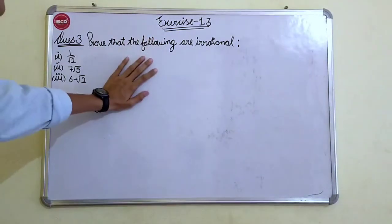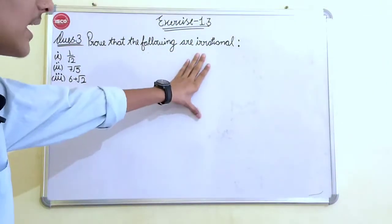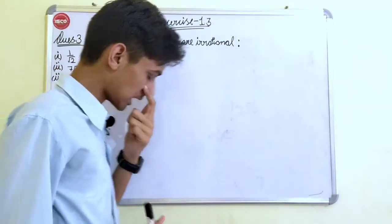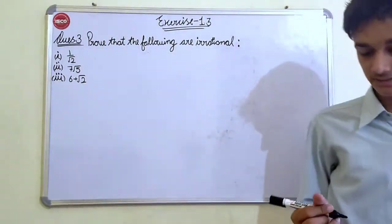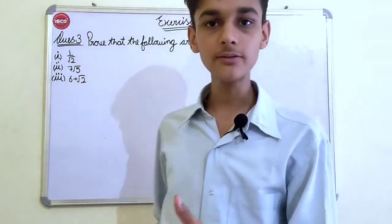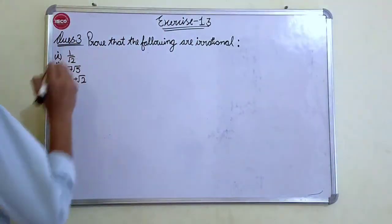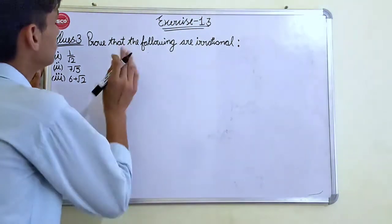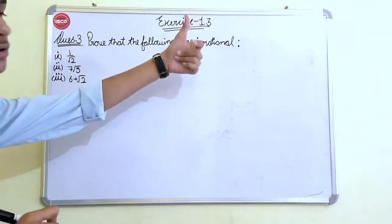In this we have to prove that the given numbers are irrational numbers. What are basically the irrational numbers? Irrational numbers are those numbers which are known in the form of P by Q. Let's do question part 1. We have to prove that 1 by under root 2 is an irrational number. Let's do it.